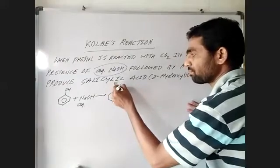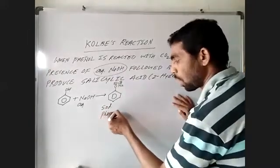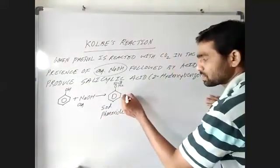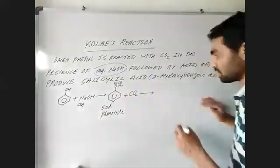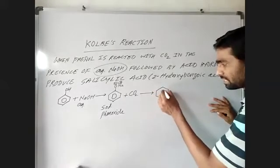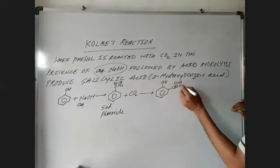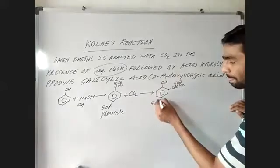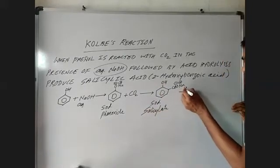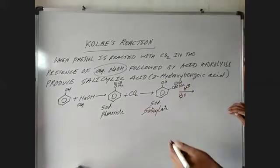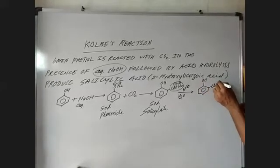This gives sodium phenoxide. When you react sodium phenoxide with carbon dioxide, the CO₂ gets attached to the ortho position, and this is the intermediate — called sodium salicylate. When you carry out the hydrolysis, just add HCl in water or H₂SO₄ in water, the COOH group forms.